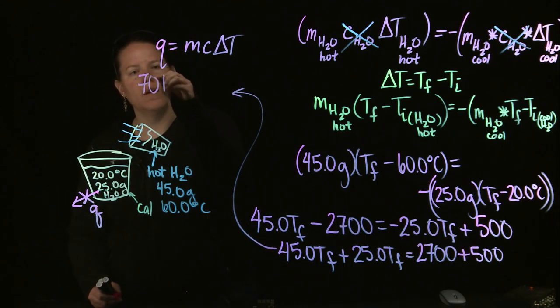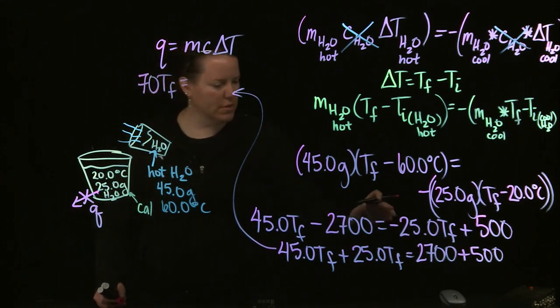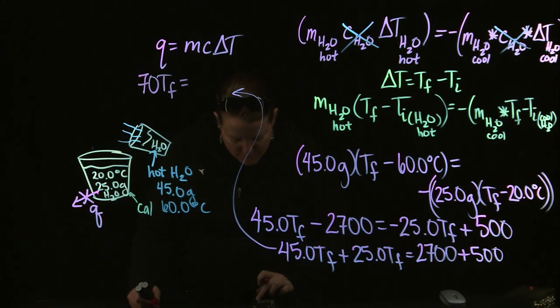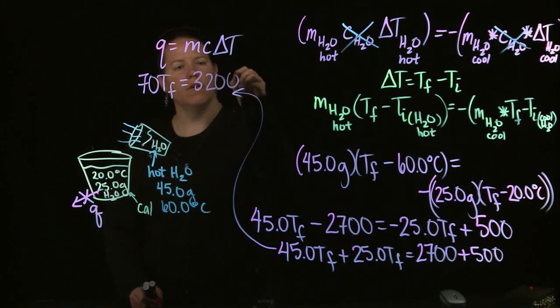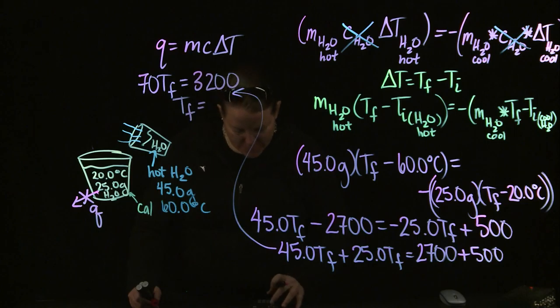So 45 plus 25 is 70. 70 T_F equals 2700 plus 500, which is 3200.